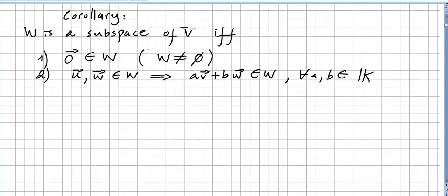Let me just quick remind you the corollary about the vector subspaces. We say that W is a subspace of vector space V if and only if zero is in W, or W is not the empty set. And two,